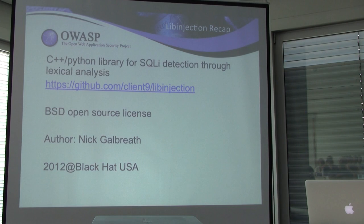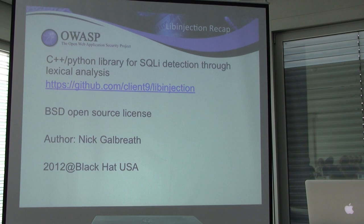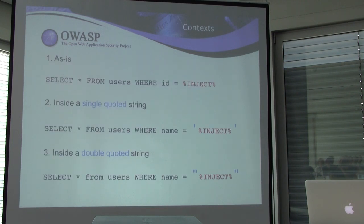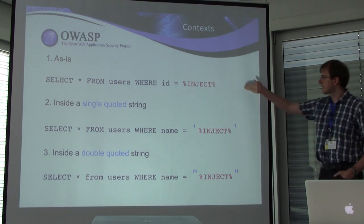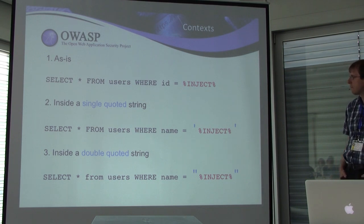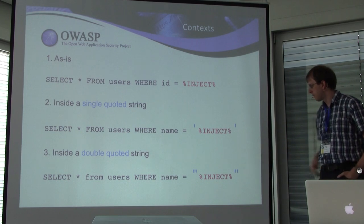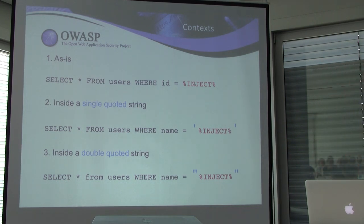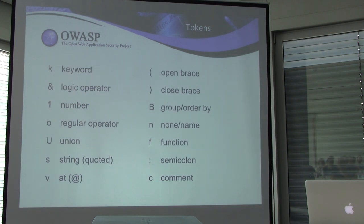Let's recap lib injection. Lib injection is a library for SQL injection detection through lexical analysis. It is available in C++ and Python implementations, it's on GitHub, it's open source, and the author is Nick Galbraith. We first saw it in 2012 at Black Hat USA. Lib injection considers three different contexts where injection could happen: the first context has no quotes around the injection string on the application side, the second has single quotes, and the third has double quotes. It's a lexical analysis parser — it creates a token representation of your input strings. The token set includes keywords, logical operators, numbers, functions, braces, and so on.